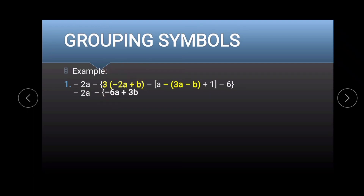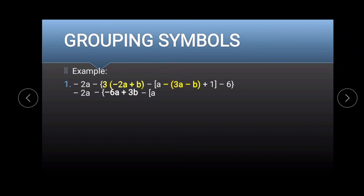3 multiplied to b gives us b. Then copy a, and negative times positive 3a gives negative 3a, and negative times negative b gives positive b. Copy plus 1 and minus 6. Now that we have eliminated the parentheses, we move to the bracket.